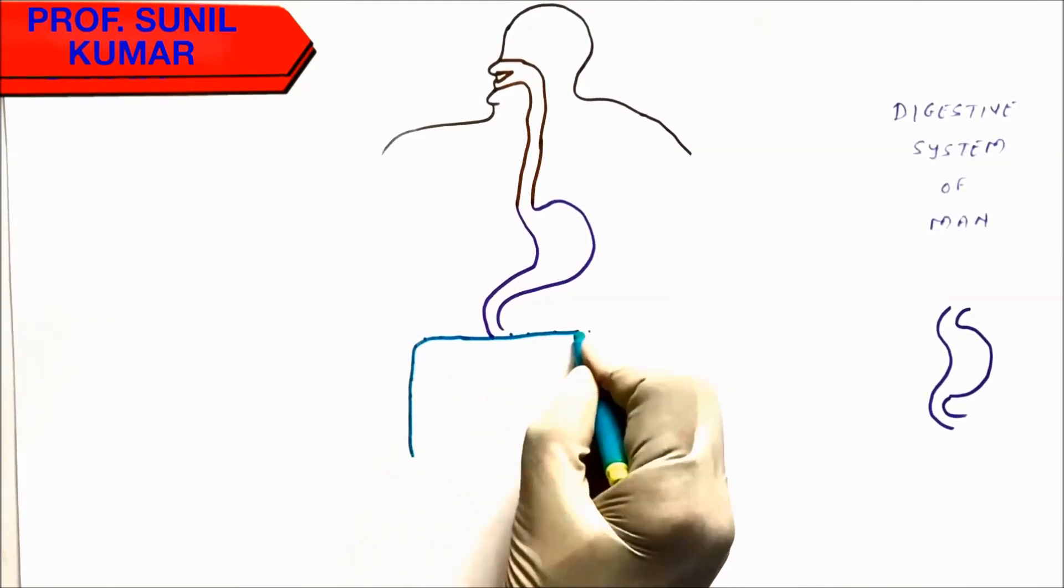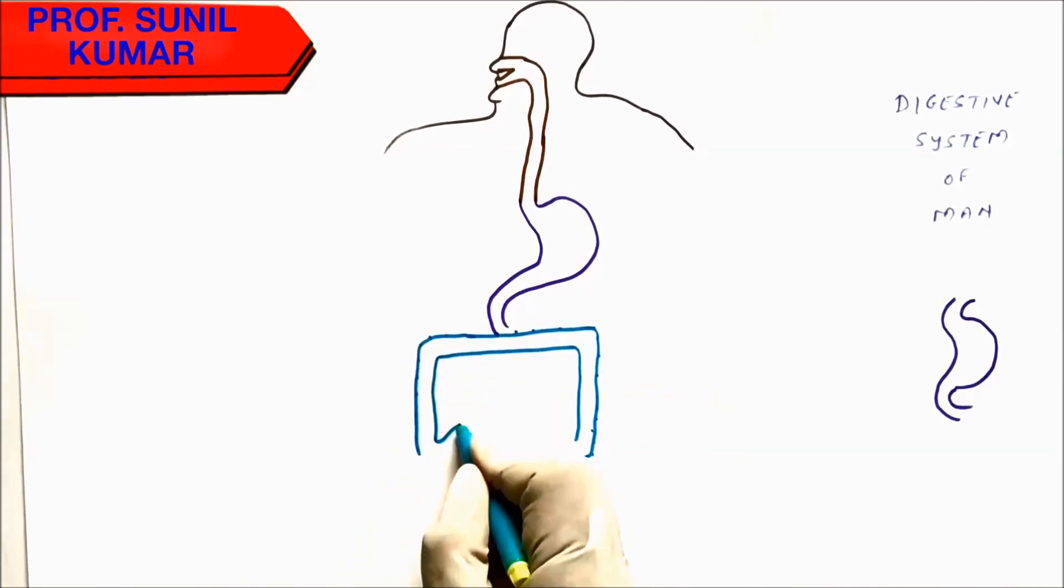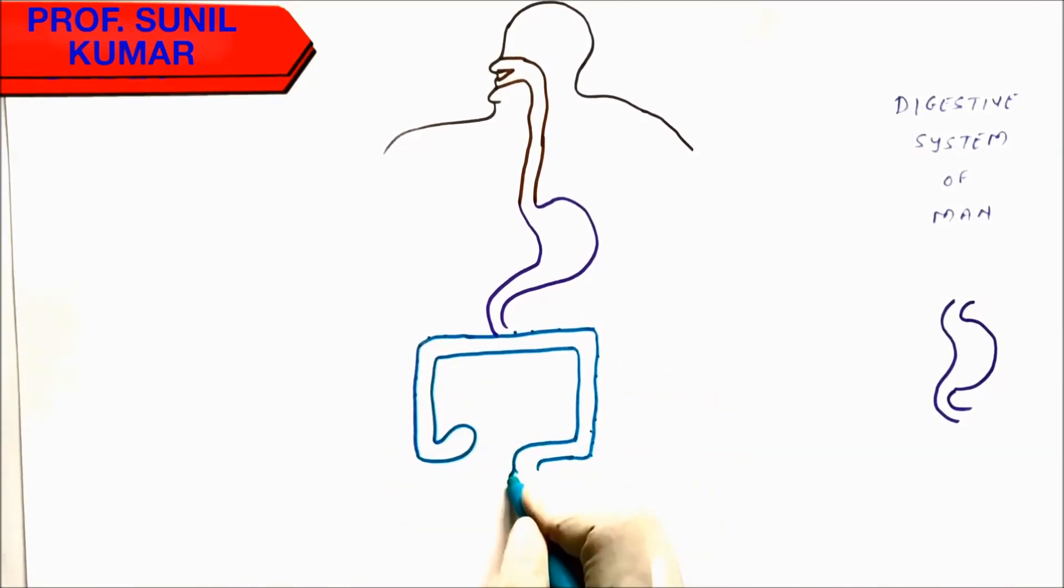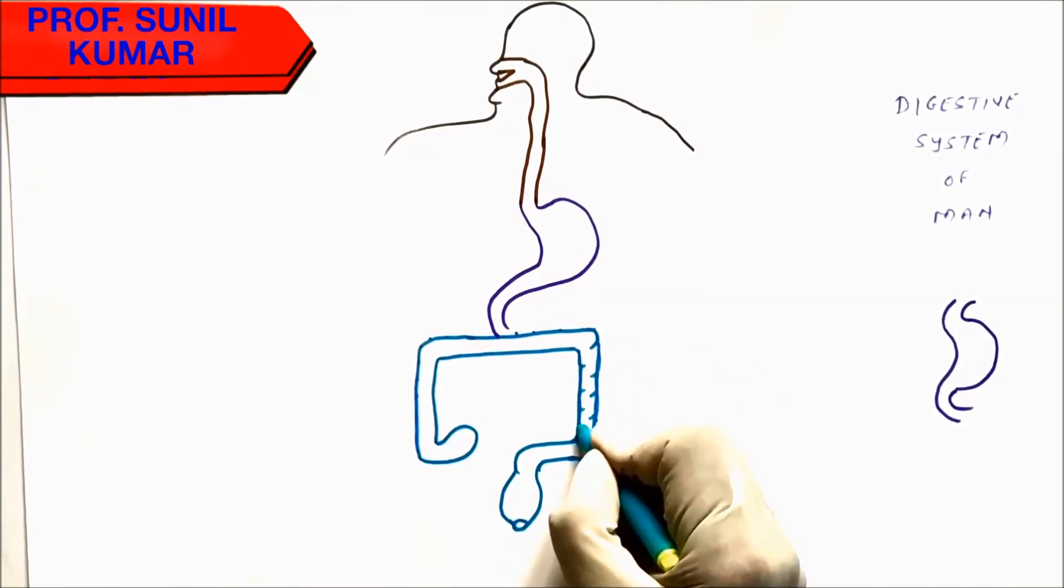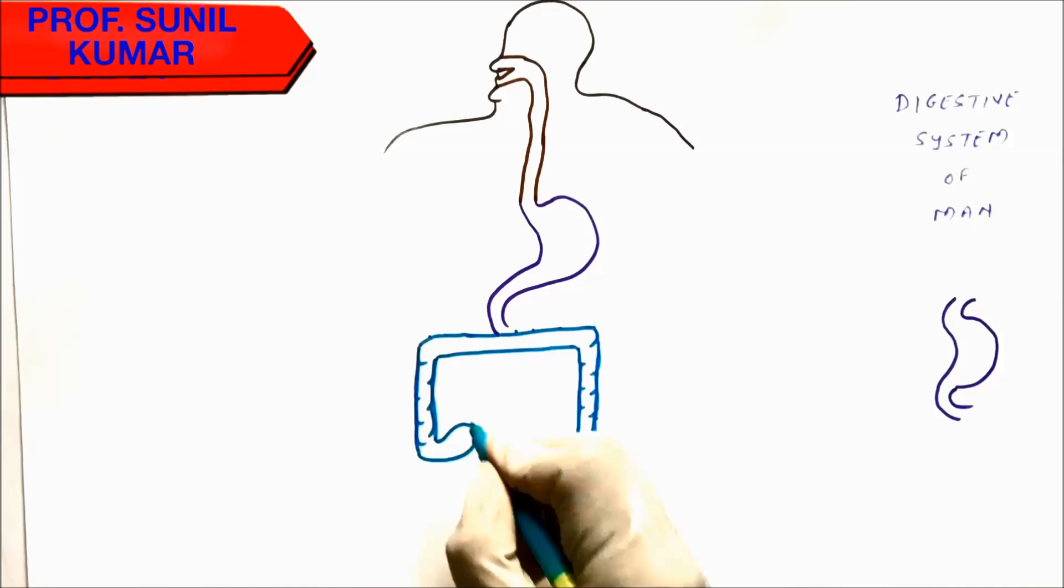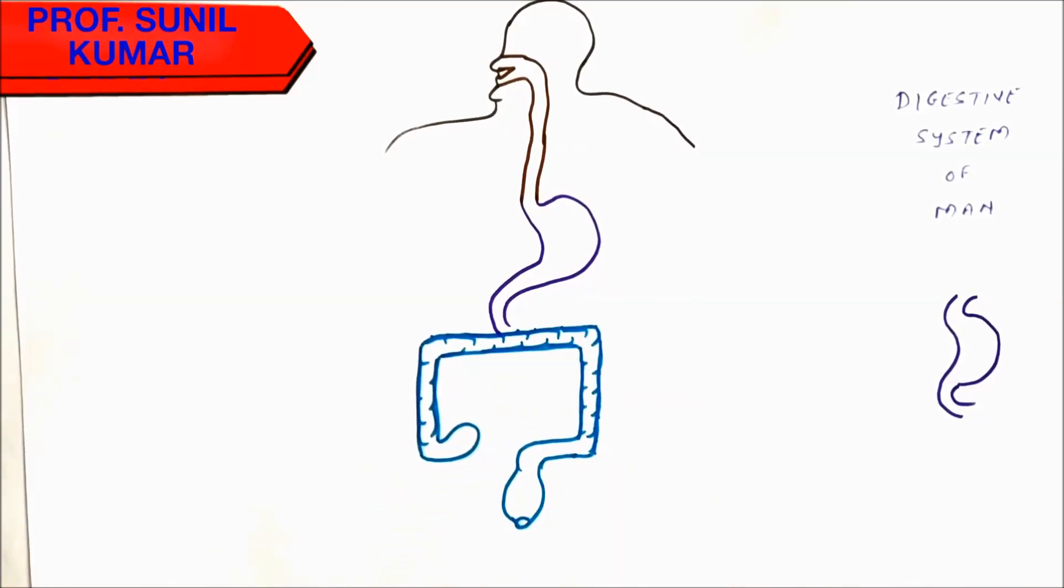After the stomach, we need to draw the large intestine. Just draw a box-like structure. When you draw a box-like structure, it becomes very easy to draw. This is the cecum, the sigmoidal colon. Just give a fold because the large intestine or the colon has small bends.